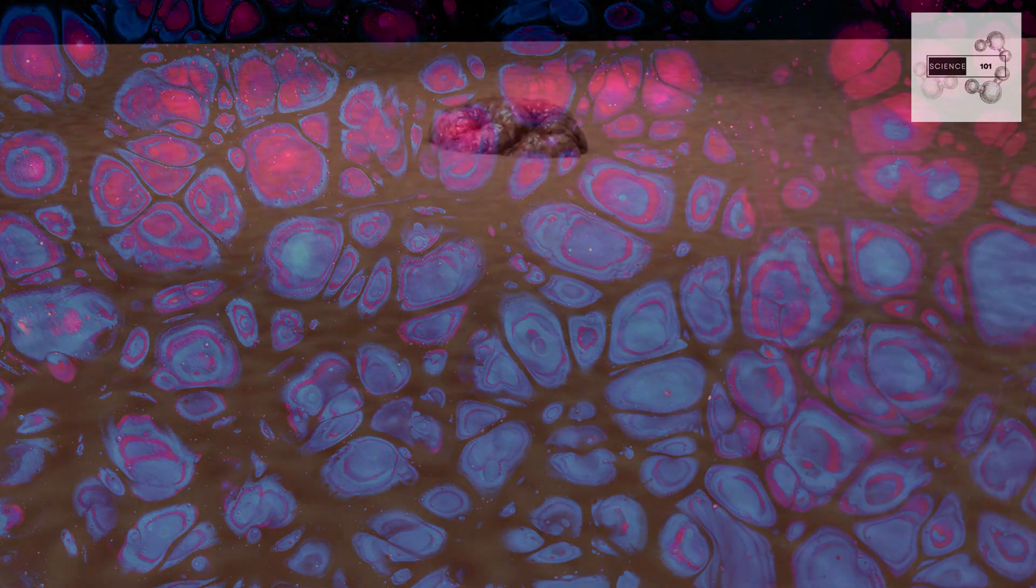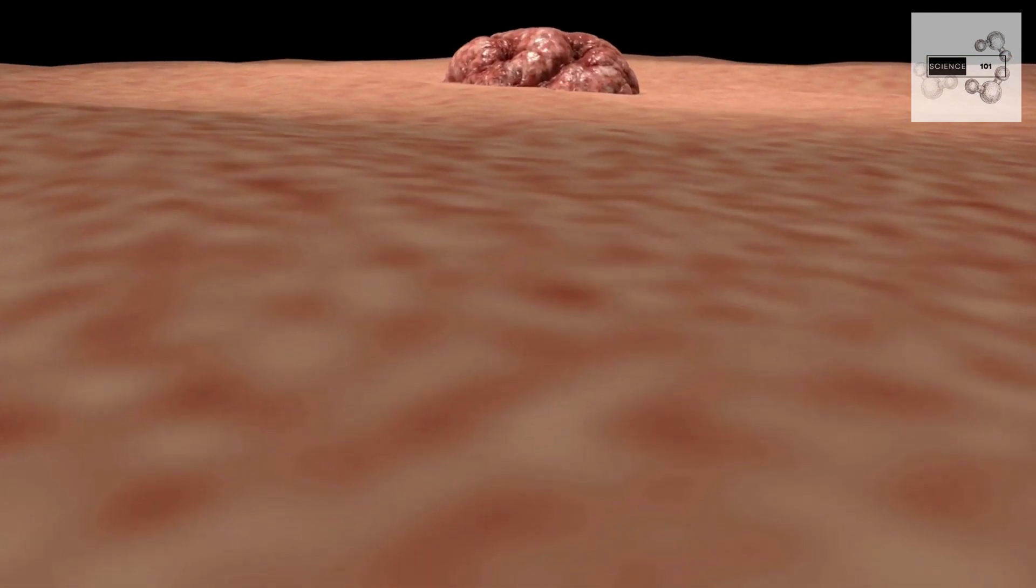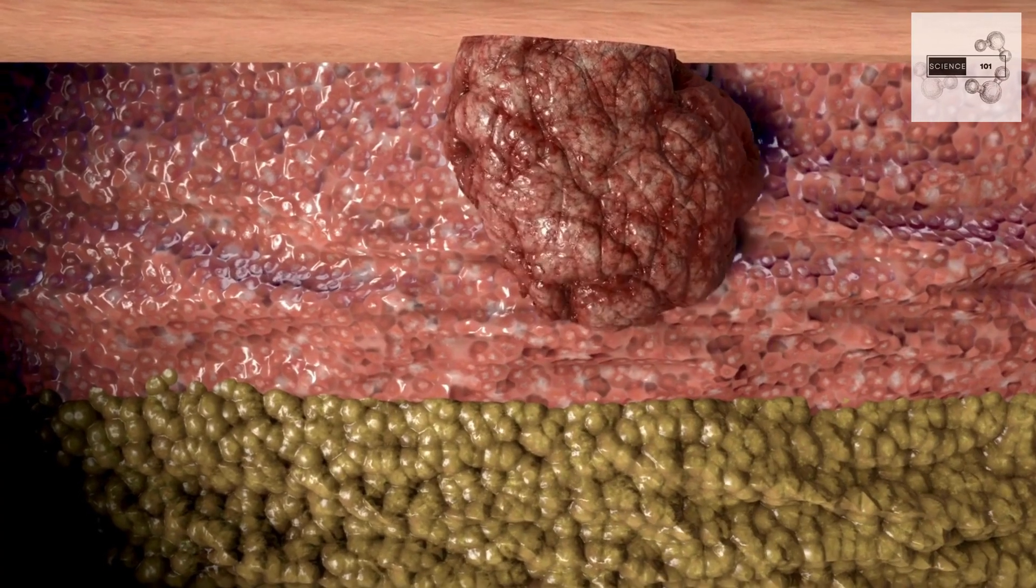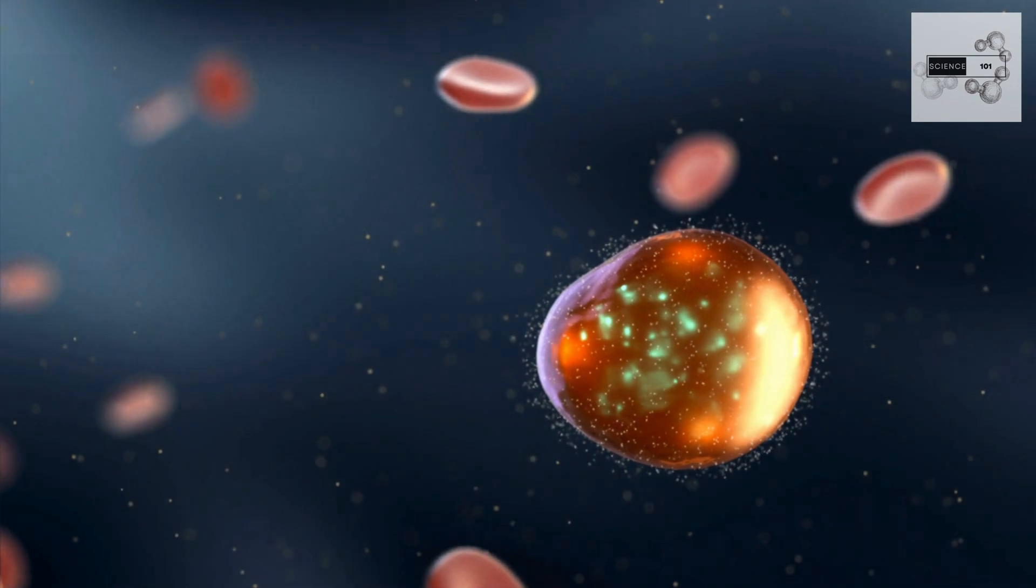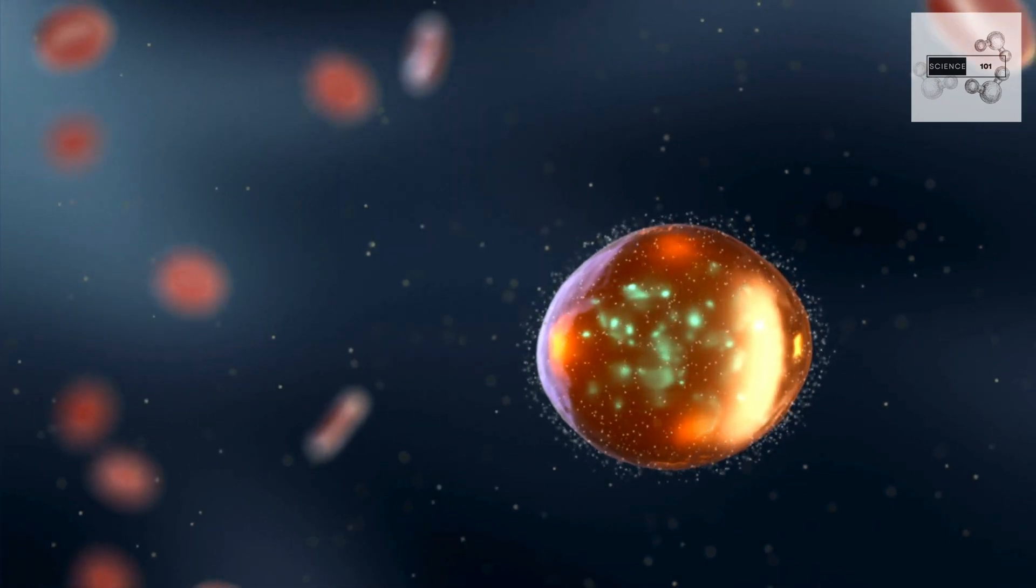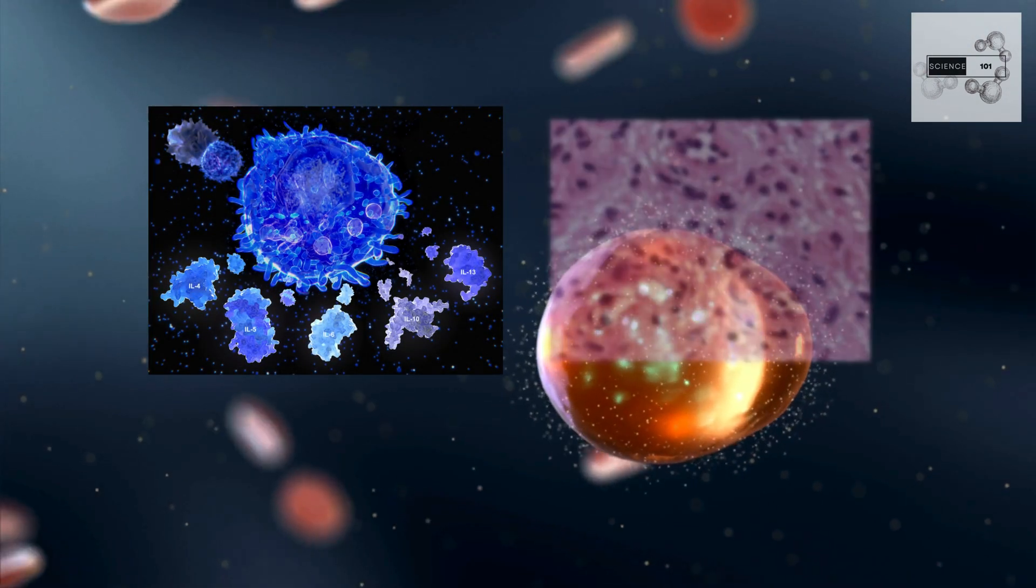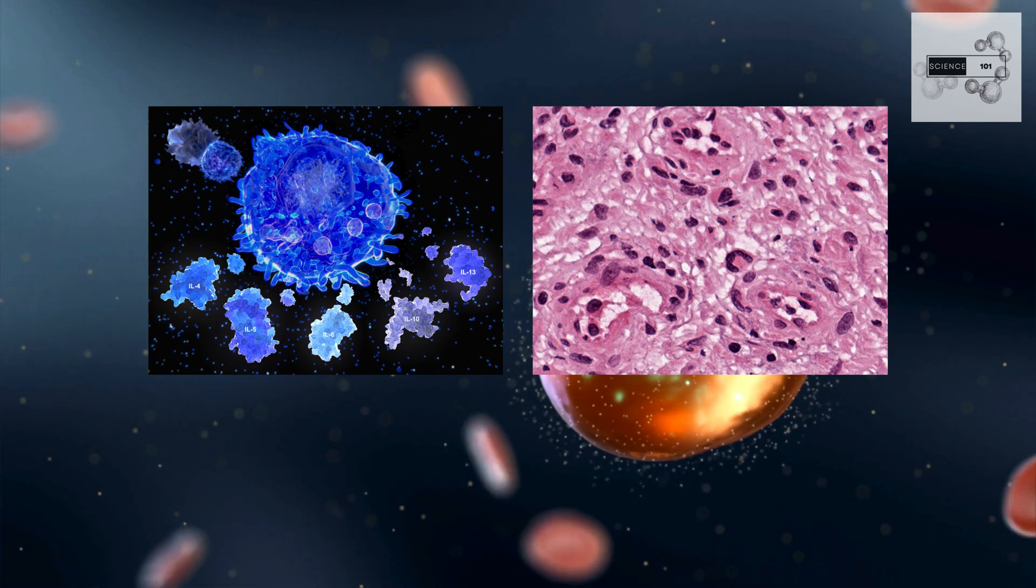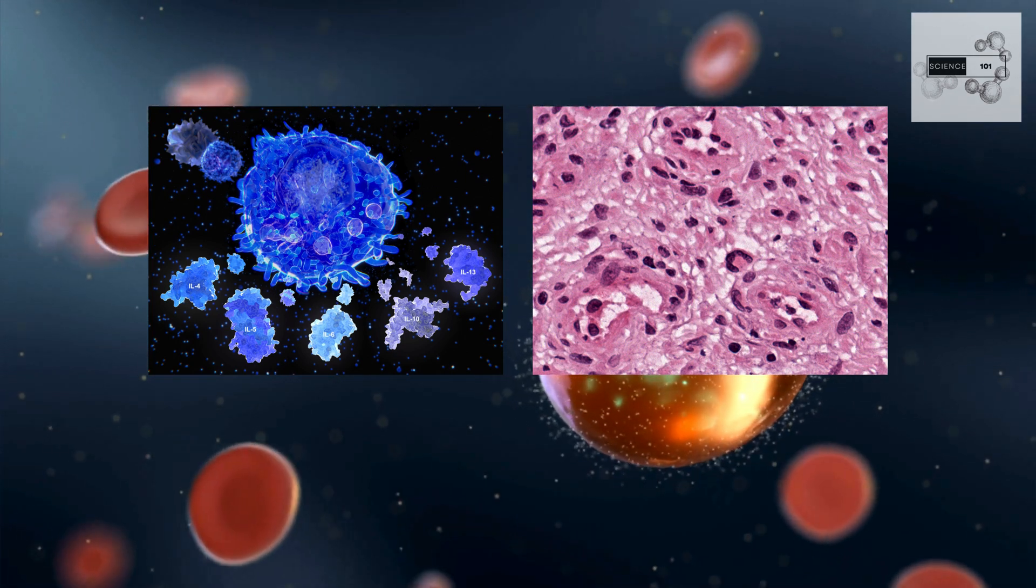Adding another layer of complexity, cancer stem cells often reside within a specialized niche within the tumor microenvironment. This niche provides a supportive environment, enriched with specific signaling molecules and stromal cells, that protects cancer stem cells from external stresses and promotes their survival.